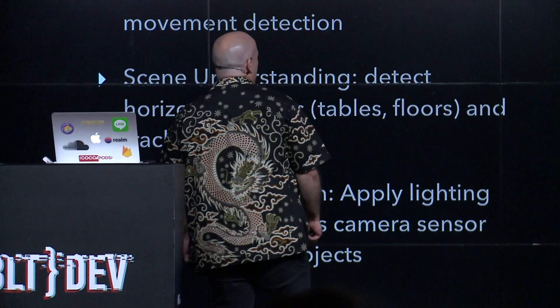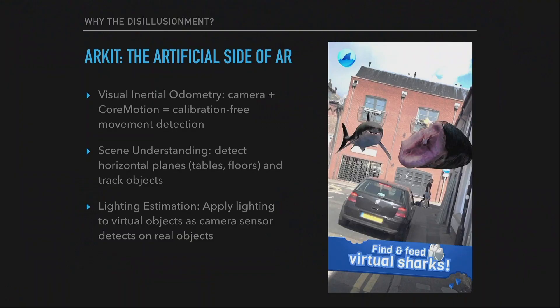Two weeks later, people eagerly downloaded it, anticipating AR magic, only to come away in a deep personal trough of disillusionment. Now why is this? ARKit gives you visual-inertial odometry — the camera plus Core Motion — it takes a scene and knows where you are. What they call 'scene understanding' is the ability to detect horizontal planes. That's it.